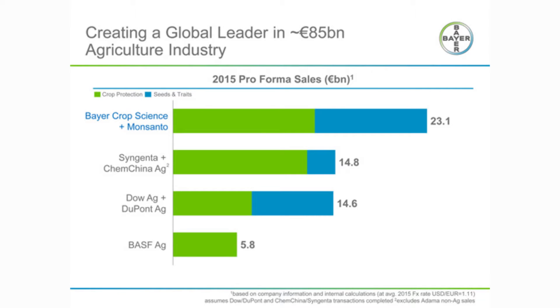Bayer Monsanto would be about a $23.1 billion company. That compares to the recent Syngenta ChemChina deal, which would put them about $14.8, and then the Dow DuPont, which would be about $14.6 billion. So this would be considerably bigger.